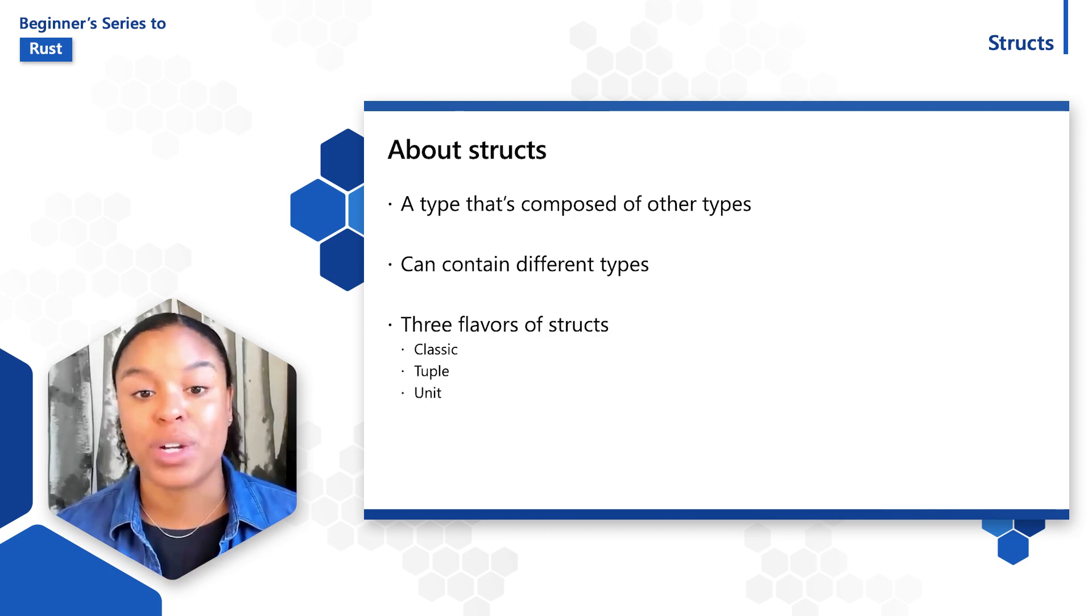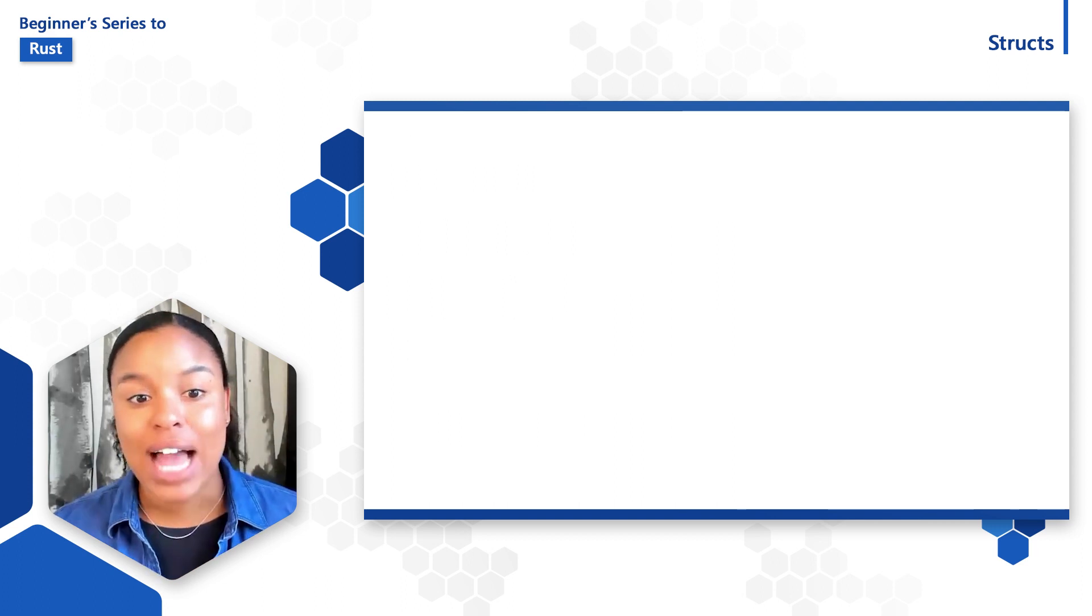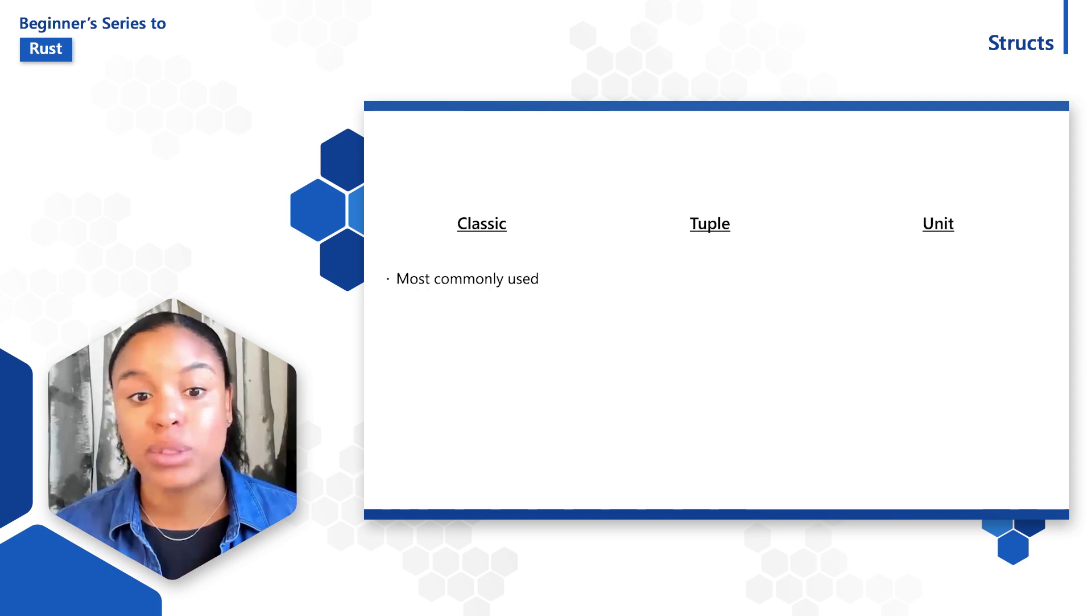Structs in Rust come in three flavors. There are classic structs, tuple structs, and unit structs. Classic C structs are the most commonly used.